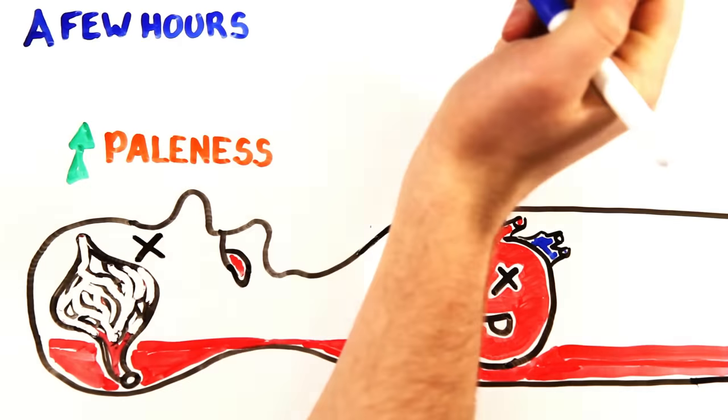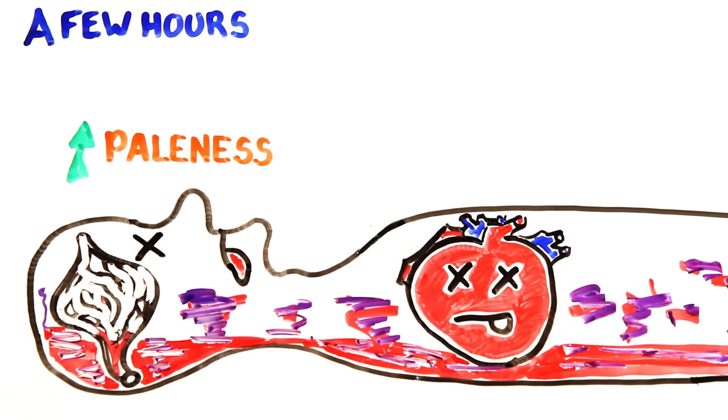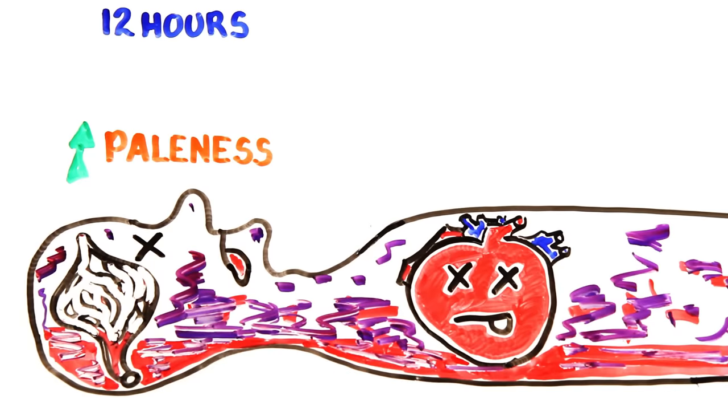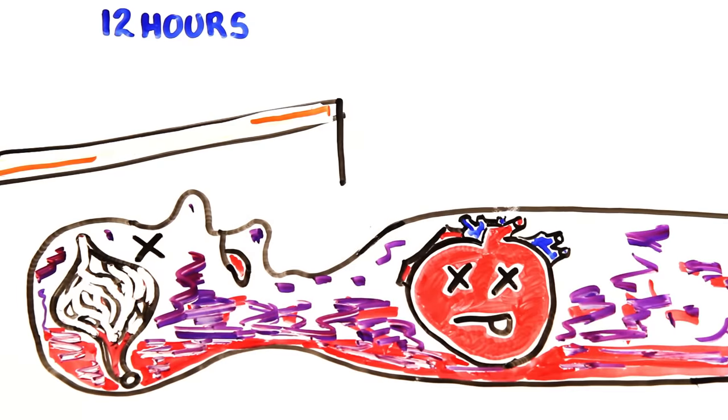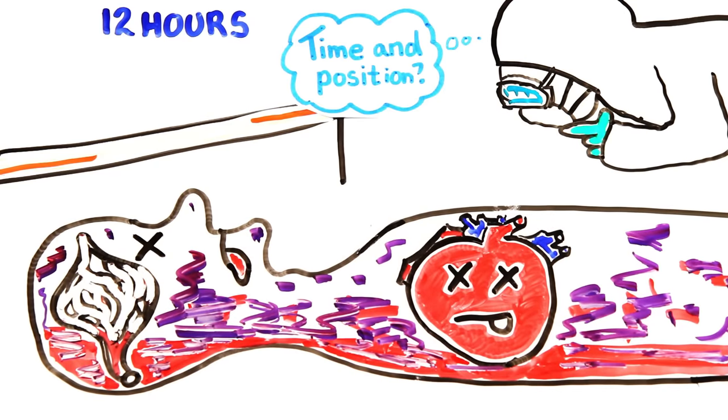After a few hours of blood pooling, a reddish-purple discoloration of the skin occurs and reaches its maximum discoloration by 12 hours. This is one of the ways in which coroners or forensic investigators determine the approximate time and position of a body at death.